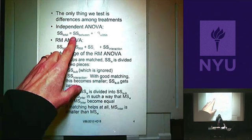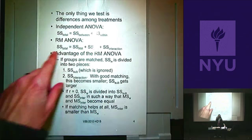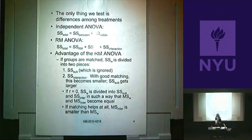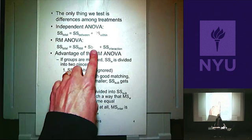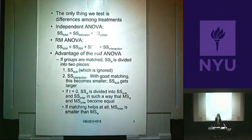If I did an independent ANOVA, SS total is made up of SS between and SS within. In the repeated measures ANOVA, SS total doesn't change — it's how far each score is away from the grand mean. What changes is how we break it up. For the repeated measures ANOVA, SS total is divided into SS repeated measures, plus SS sub for the people, plus the interaction of those two things.